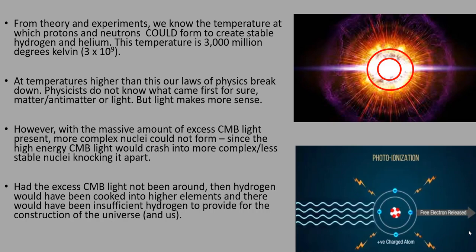Physicists do not know what came first for sure, matter/antimatter or light. But light makes more sense. However, with a massive amount of excess CMB light present, more complex nuclei could not form, since the high-energy CMB light would crash into more complex, less stable nuclei, knocking it apart. Had the excess CMB light not been around, then hydrogen would have been cooked into higher elements and there would have been insufficient hydrogen to provide for the construction of the universe and us.